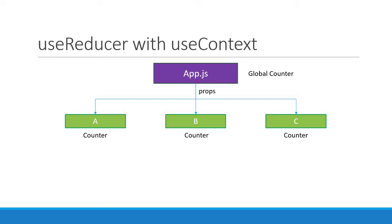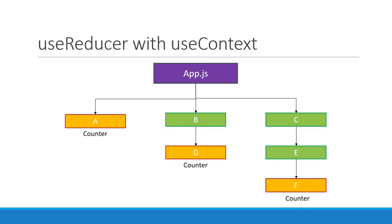Unfortunately, real-world applications are not this simple. Your components will be nested deep within the component tree, and when there are deep levels of nesting, passing props through every component is not the best solution. Consider the example from the context video: we have app.js and within it, at different levels, we have different components. Our requirement is to share a counter state between components A, D, and F. Passing props through so many levels is definitely a bad idea. A good solution is to use the context API — and since we are dealing with hooks, a good solution is to use the useContext hook.